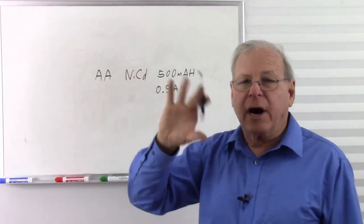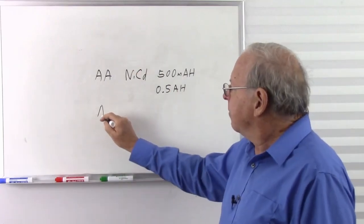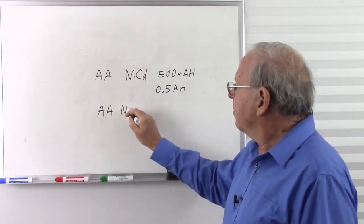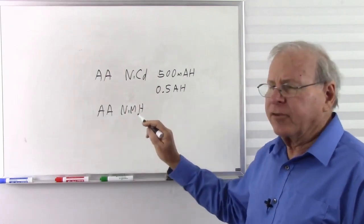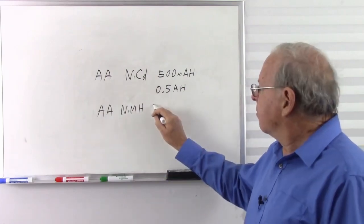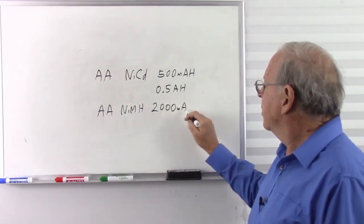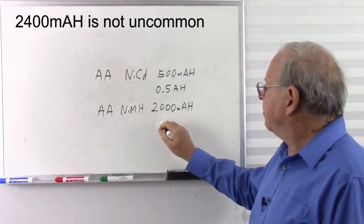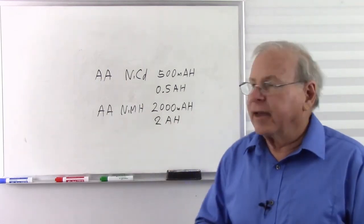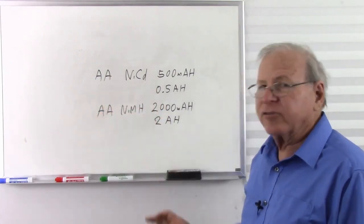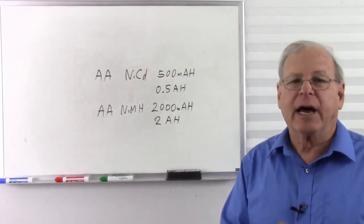When it comes to the modern replacement for nickel cadmiums — your nickel metal hydrides — I've seen double-A nickel metal hydrides that go up to 2,000 milliamp hours, or basically two amp hours. So your nickel metal hydrides have a much more robust chemistry than your nickel cadmiums, which have been basically replaced by the nickel metal hydride.